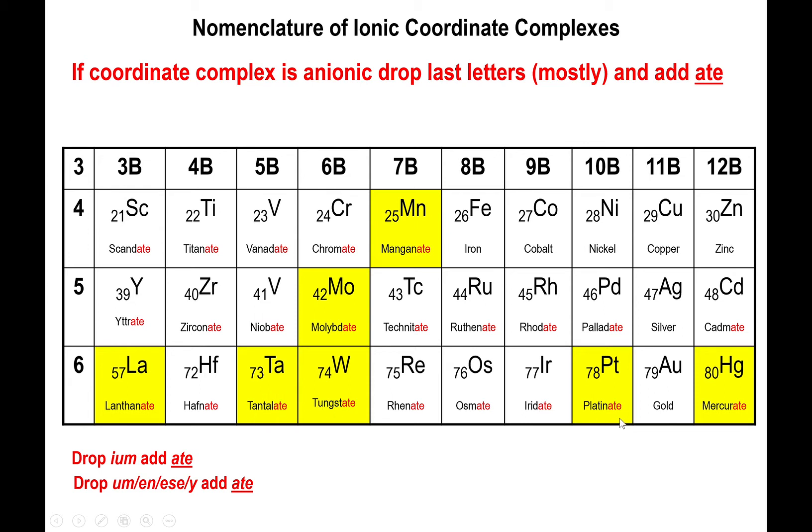Before we get into the interesting ones, cobalt, nickel and zinc are actually probably the easiest ones because all you're going to do is add the ending -ate to each one of these metals. So cobalt becomes cobaltate, nickel becomes nickelate and zinc becomes zincate.